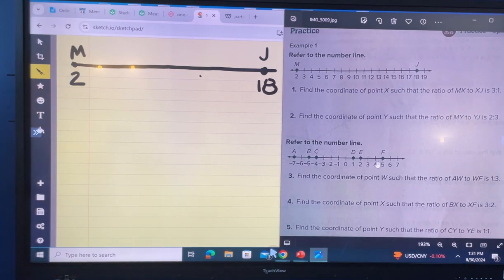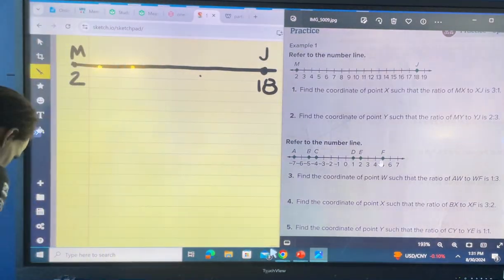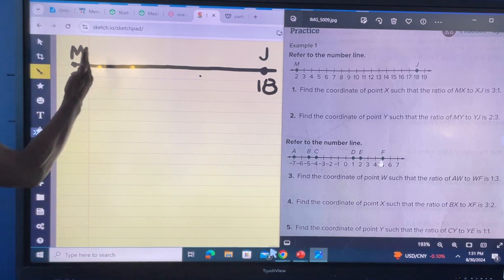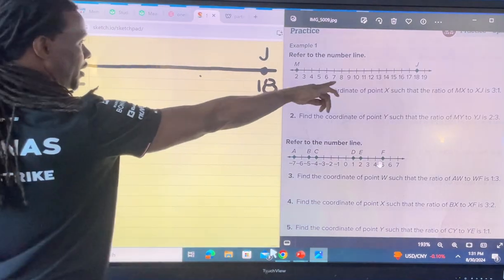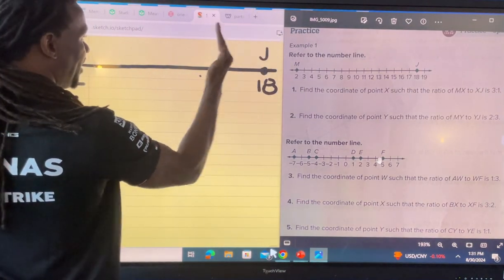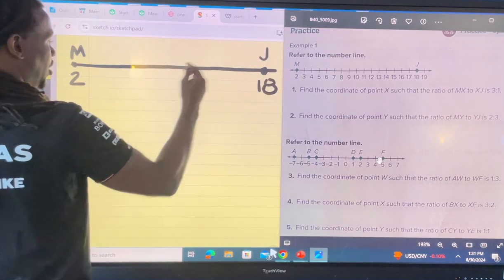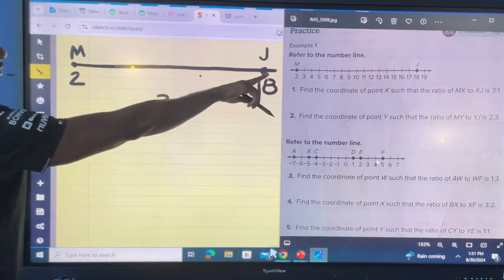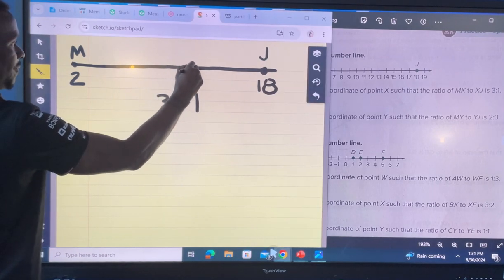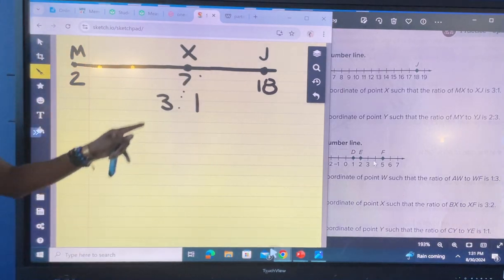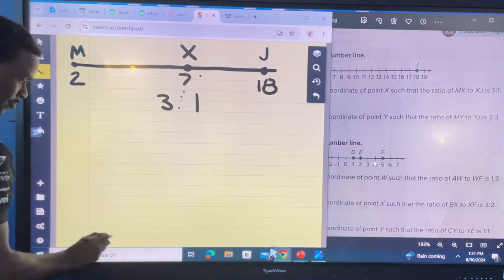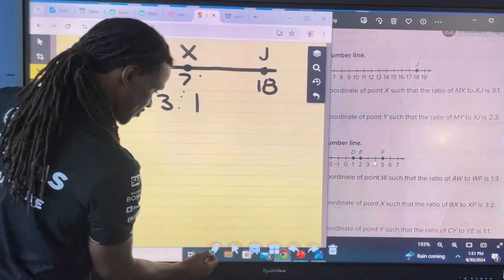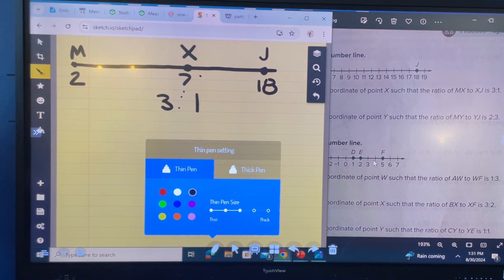All right, back to live action. So they're asking us, find the coordinate of point X, meaning we got to find where point X is going to fall in between point M and X to J with the ratio of 3 to 1. So we need a ratio of 3 to 1. Now, somewhere on this line, our X coordinate is going to fall somewhere on this line, and we got to figure out what this number is. Does anybody understand what's going on?